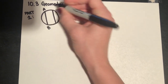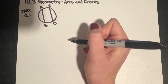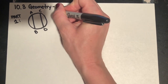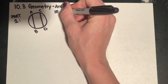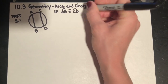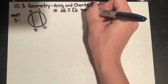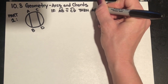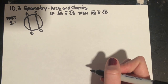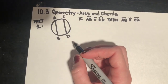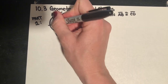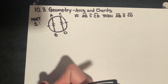We have several theorems in 10.3, and our first theorem is: if arc AB is congruent to arc CD — those lovely if-then statements — then chord AB is congruent to chord CD. So in this picture, if arc AB is congruent to arc CD, then chord AB is congruent to chord CD.